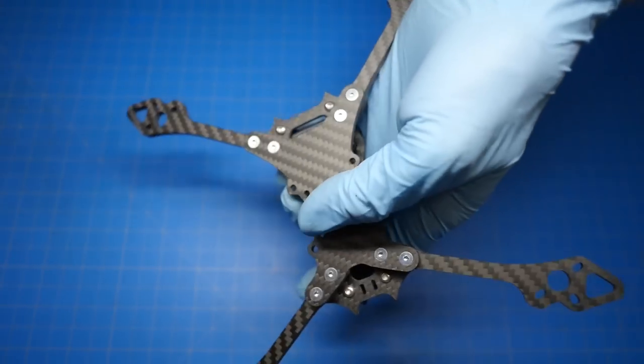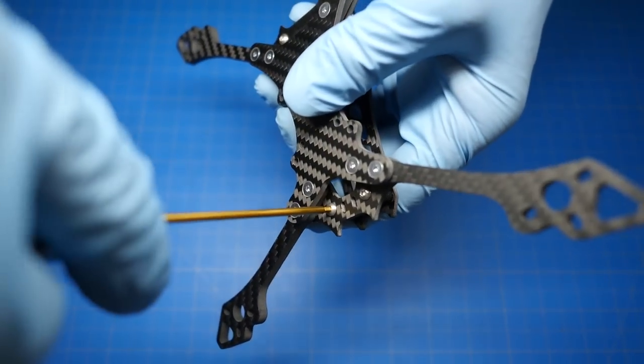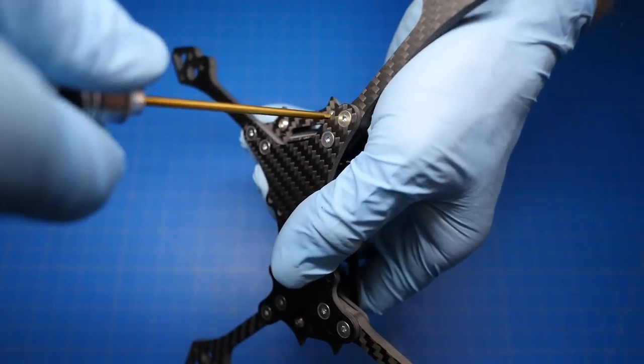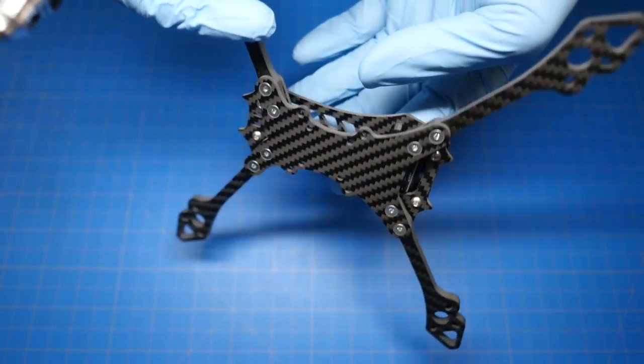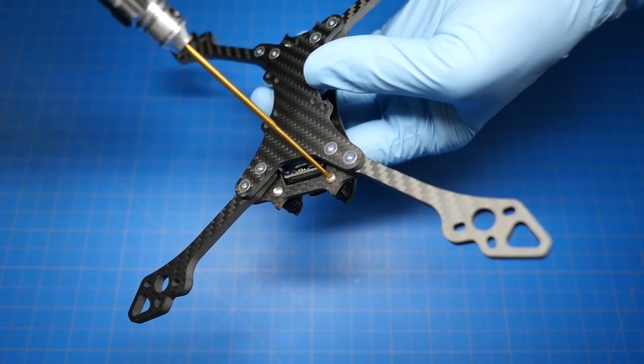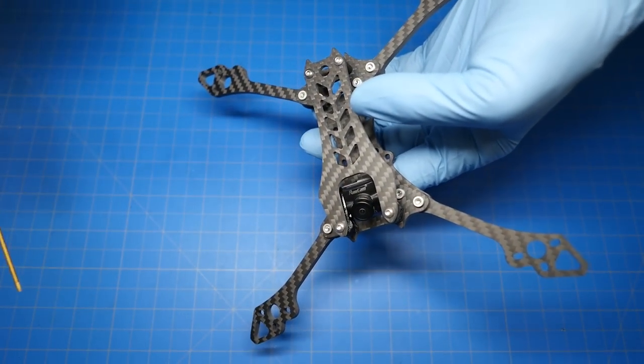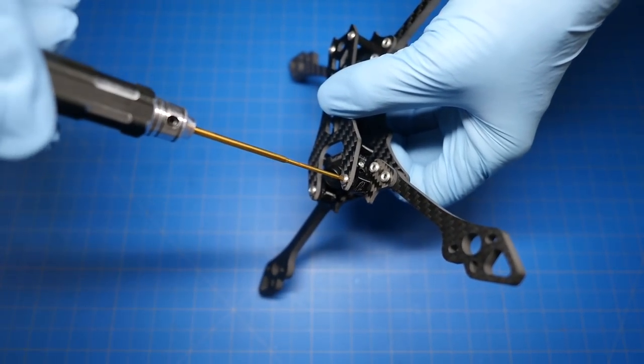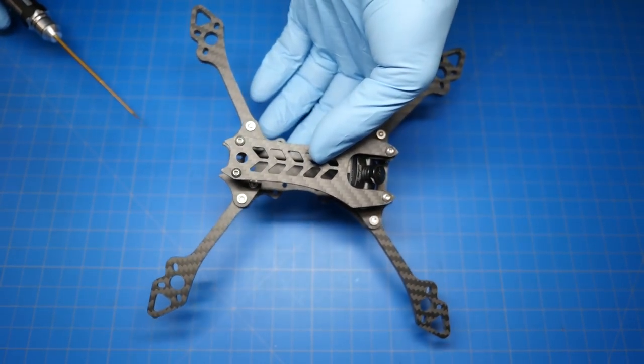Once you've tightened those down, you can go back to the bottom and tighten these guys all the way. A little trick that one of my team pilots pointed out is you might consider putting some blue Loctite on these screws here on the bottom. The reason being is that when you're out in the field and you want to take this top plate off, if you've got blue Loctite on there, it's going to hold those bottom screws and then when you take this screw off, the standoff isn't going to spin.